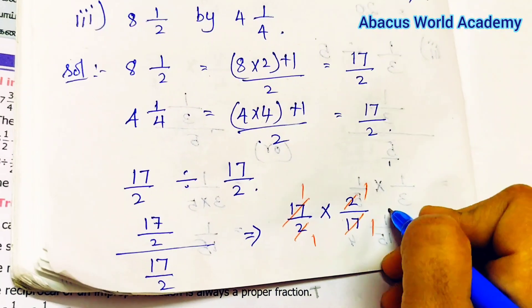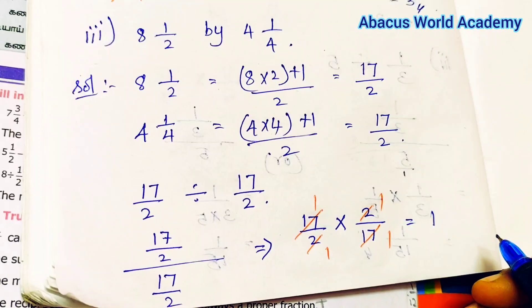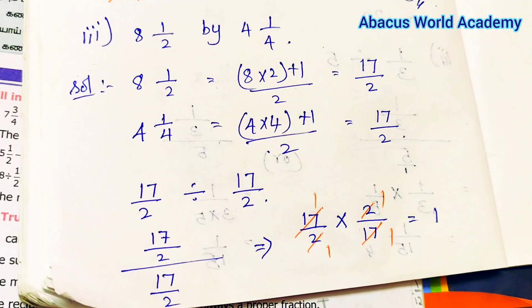So 2 is equal to 17 by 2, 17 by 2 is equal to 17 by 2.